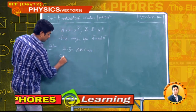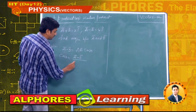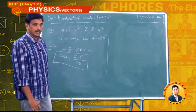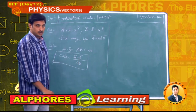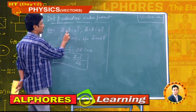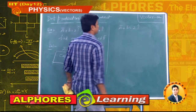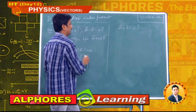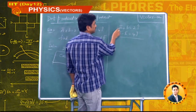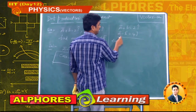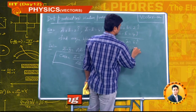cosθ = (ā · b̄) / (ab). We don't know ā or b̄ individually, so we calculate them. Adding the two equations: ā + b̄ = 2î and ā − b̄ = 4î gives 2ā = 6î, so ā = 3î.